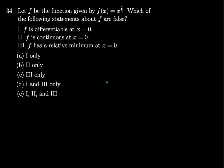34. Let f be the function given by f of x is equal to x to the two-thirds. Which of the following statements about f are false? So we have three choices: f is differentiable at x equals zero, f is continuous at x equals zero, and f has a relative minimum at x equals zero.